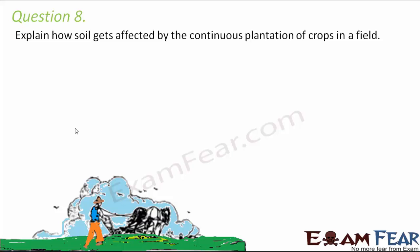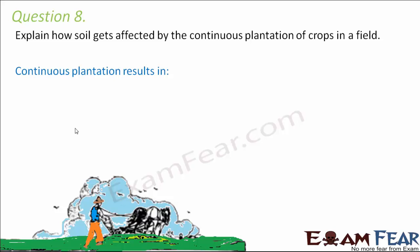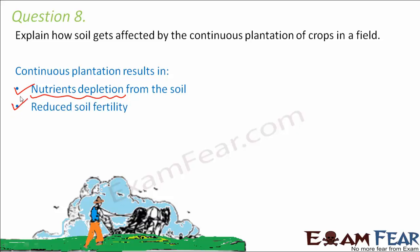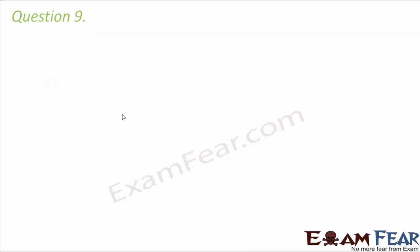Question number eight: explain how soil gets affected by continuous plantation of crops in a field. If you continuously cultivate crops in the same field, the plants will keep absorbing minerals and nutrients from the soil with no recovery gap. Over time, most nutrients will get used up, leading to nutrient depletion in the soil. As a result, the soil fertility will also reduce — these are the two major impacts of continuous crop cultivation.